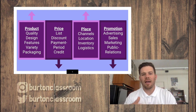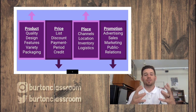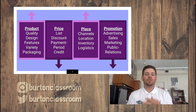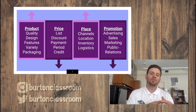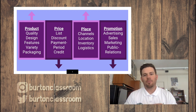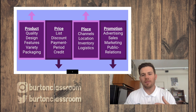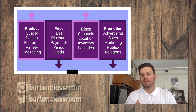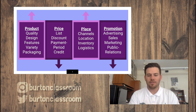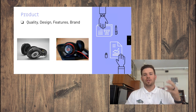When you look at product, we're talking about quality, design, features, variety, and packaging — everything that comes into the product. For price, how much are we listing it for, are we going to offer discounts, what's our payment period and credit? Place covers channels — retail or online — location, brick-and-mortar, inventory, and logistics. And promotions covers advertising, sales, marketing, and public relations.